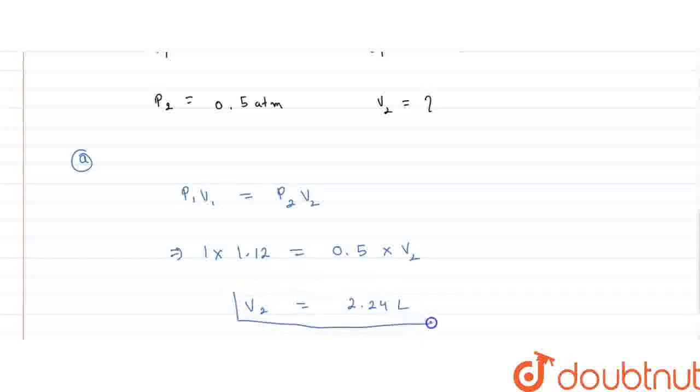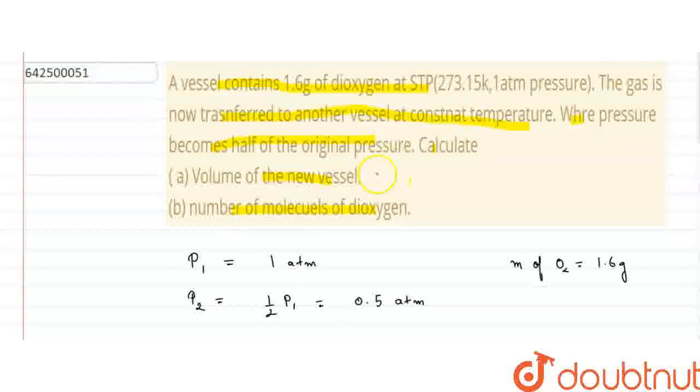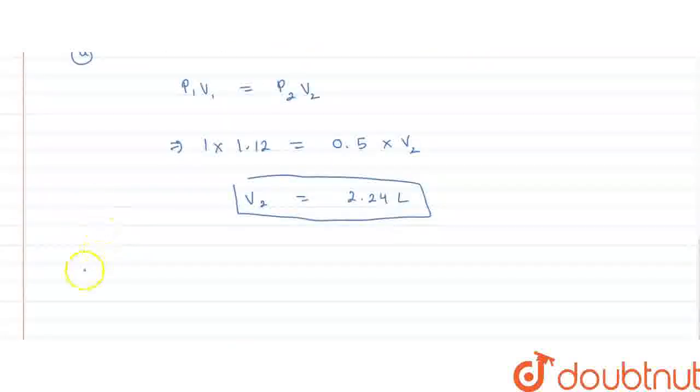So, this is our volume when it has been transferred. From here, we can write that the volume of the new vessel comes out to be 2.24 liters. Now, we have to calculate the number of molecules of dioxygen. So, let us calculate that as well, B part.